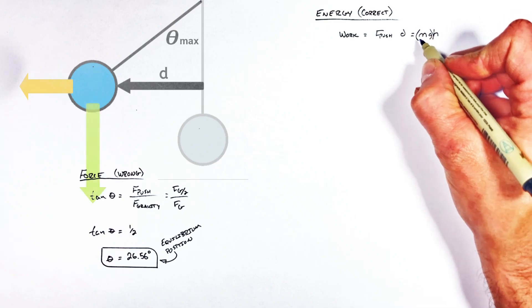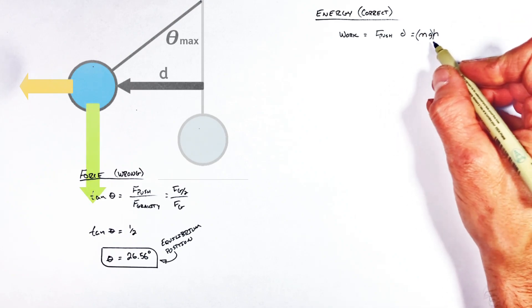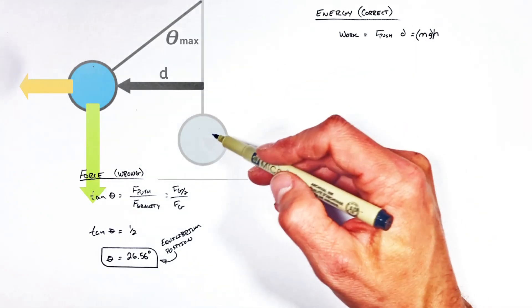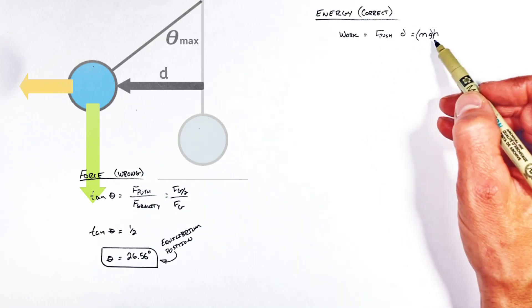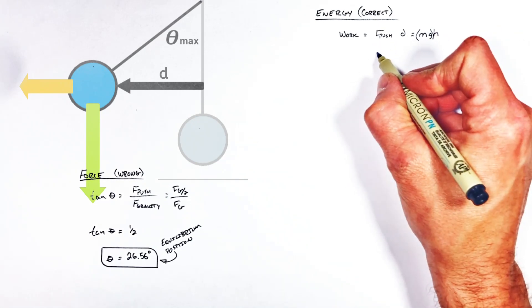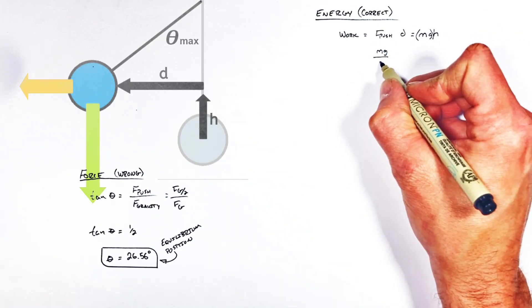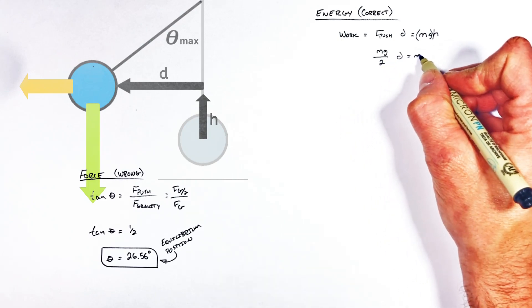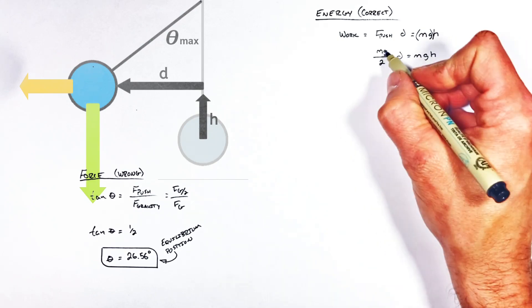Now realize, this term right here, mg, is the force by gravity. And we decided in this problem the push force is half of the force by gravity. Meaning, the height which the pendulum travels upward is going to be half of the horizontal displacement of the pendulum.